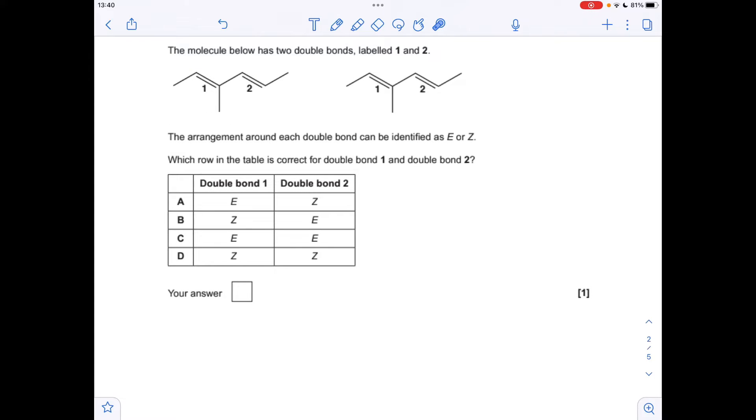Next question, we've got to identify the type of isomerism in each of the double bonds. So I've just made a copy of the molecule so we can talk about each bond separately. So if we look at the first double bond here, the priority group on the first carbon is the CH3 group. This carbon's got a higher atomic number than hydrogen.